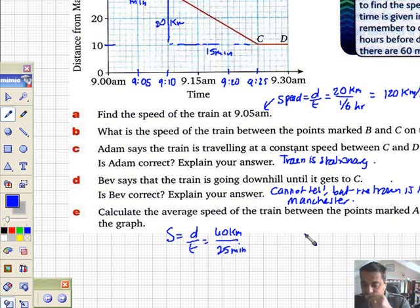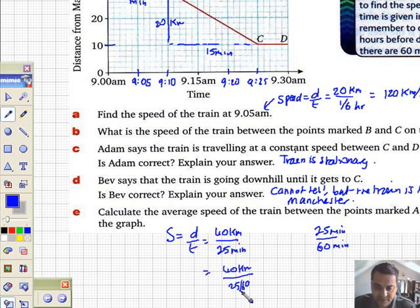I need to divide that by how long? From 9 o'clock to 9.25 is 25 minutes. Let's just convert these minutes into parts of an hour. If I take 25 minutes and divide that by 60 minutes, I have a fraction of an hour. I've got 40 kilometers divided by 25 over 60.